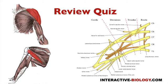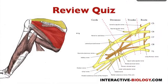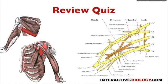Let's do a quick review. The deltoid muscle and teres minor are both innervated by the axillary nerve. Supraspinatus and infraspinatus are both innervated by the suprascapular nerve. Subscapularis and teres major are both innervated by the lower subscapular nerve, and subscapularis alone is also innervated by the upper subscapular nerve.